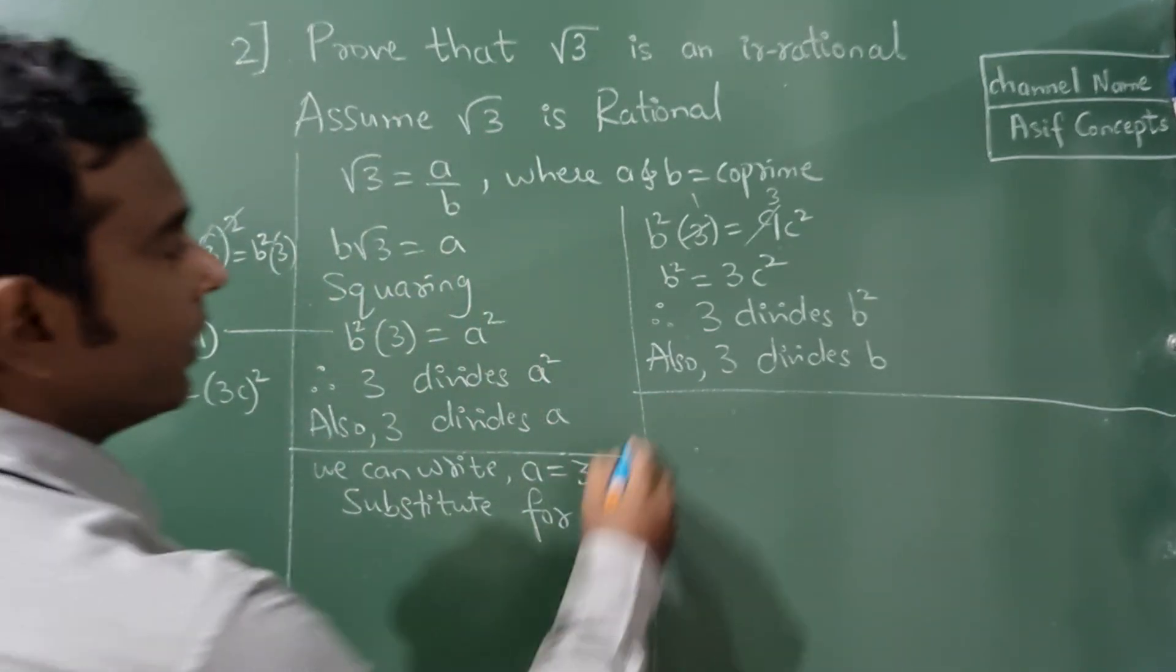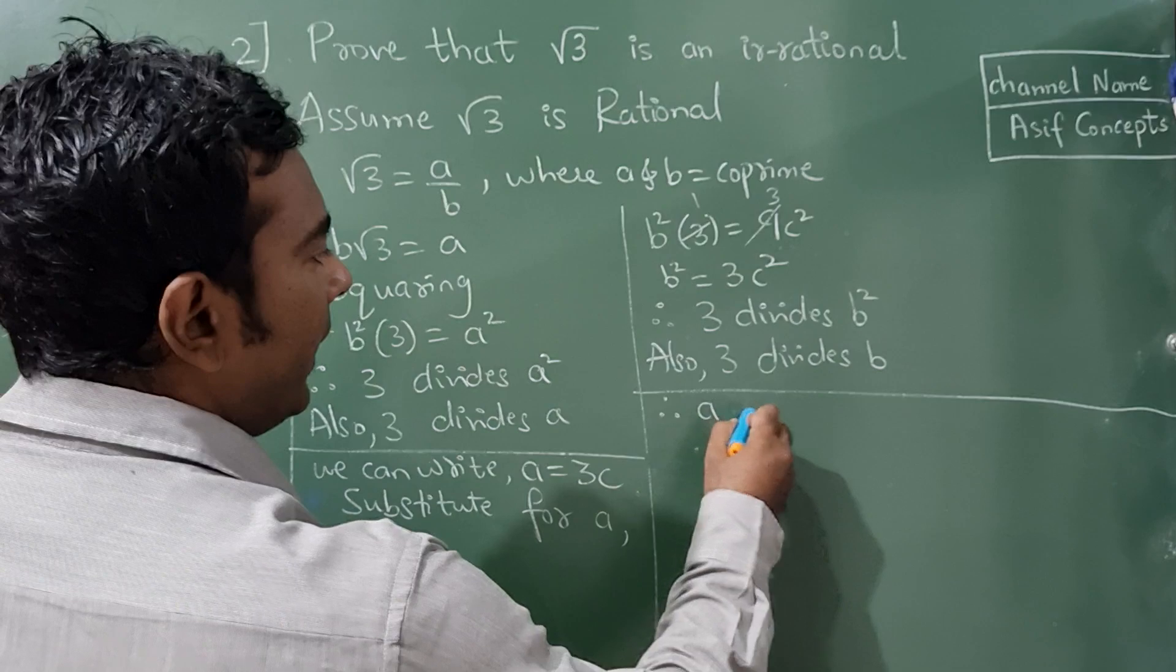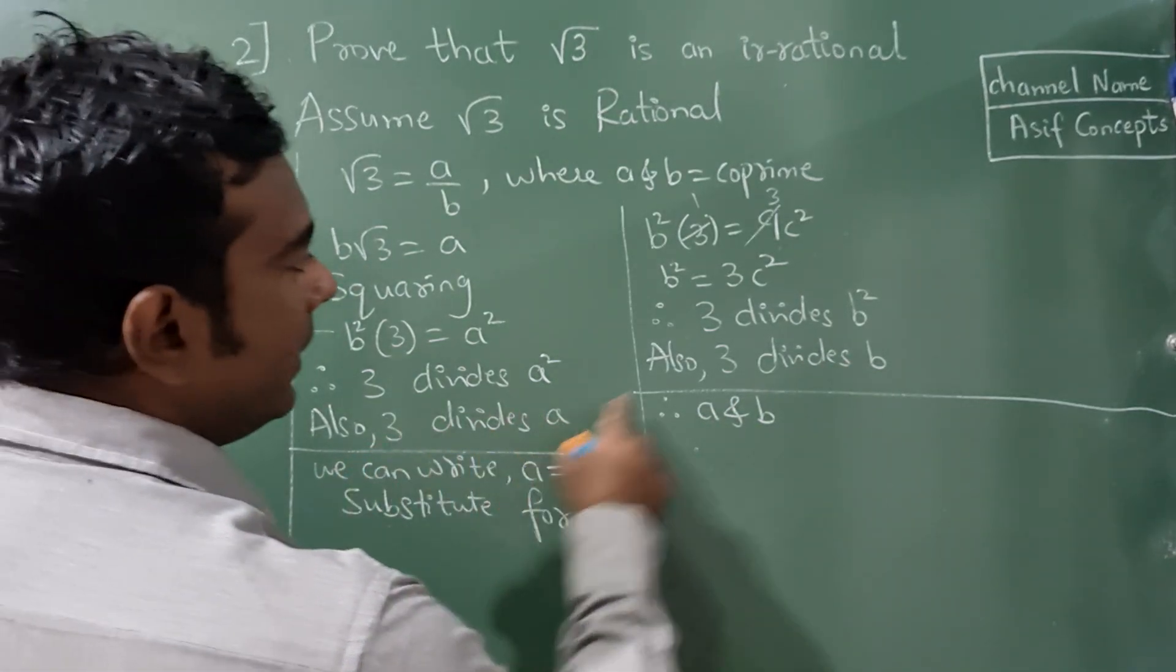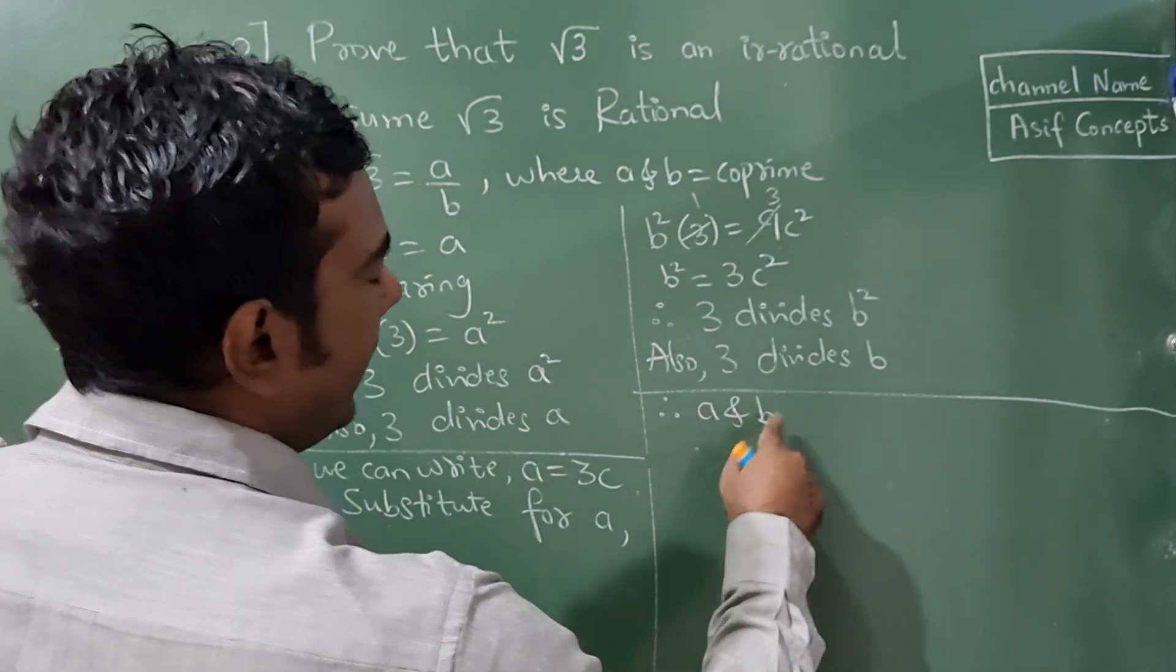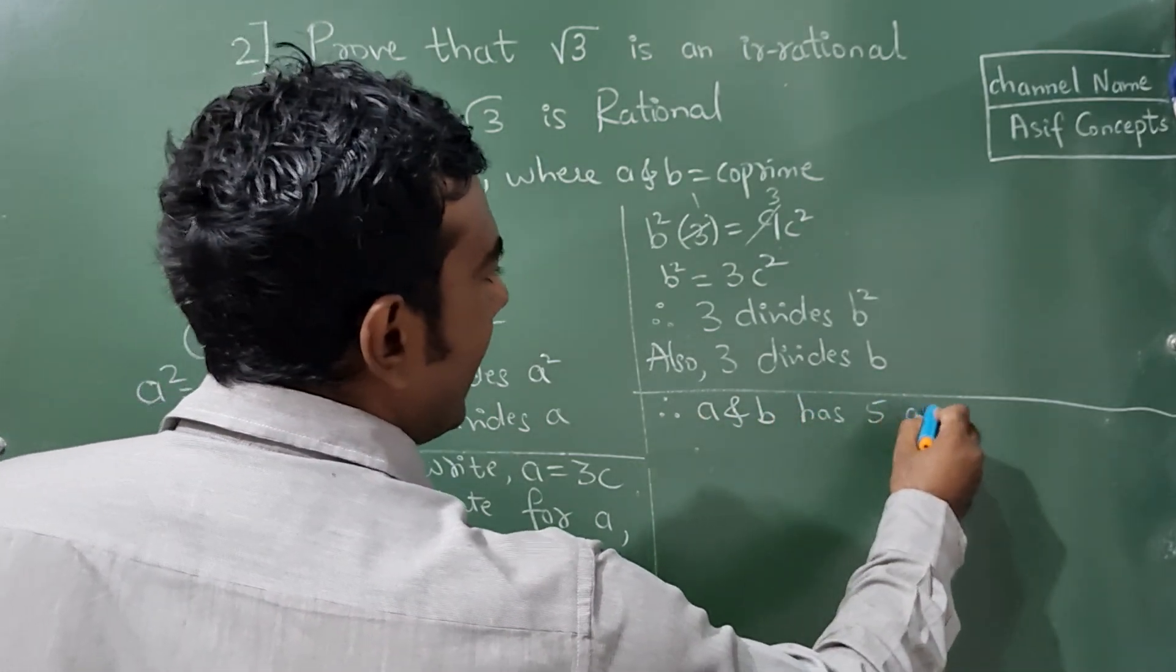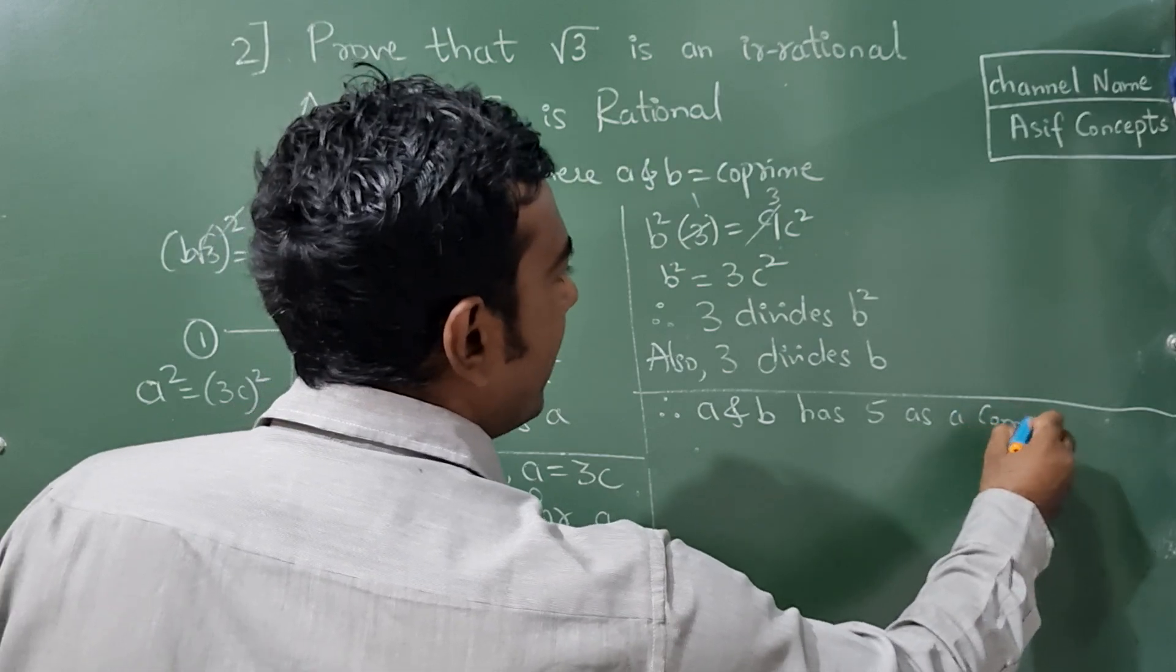Now, therefore, a and b, you can see here, 3 divides a, 3 divides b. Therefore, a and b has 3 as a common factor.